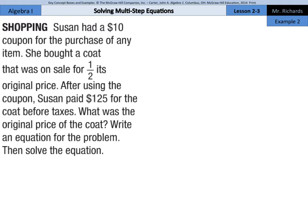We're trying to find the original price. We know that she paid half of the original price and then used the coupon for $10. So what we can say for this equation is one half the original price, p, minus the $10 coupon was equal to the $125 that she paid.